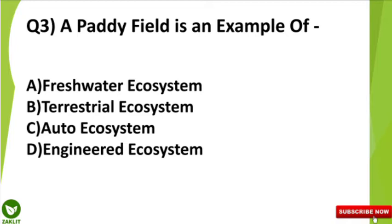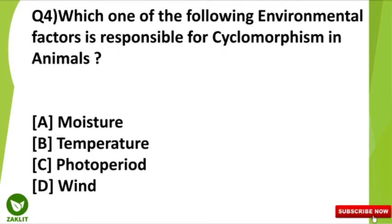The fourth question is: which one of the following environmental factors is responsible for cyclomorphism in animals?